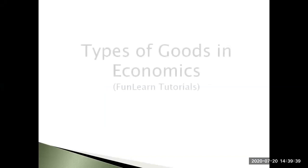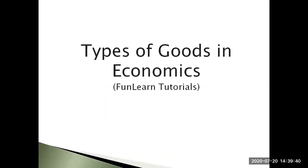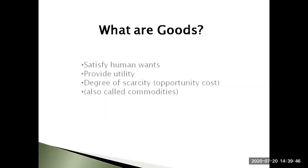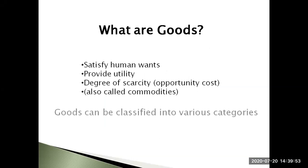In today's video we'll be covering types of goods in economics. In economics, goods are items that satisfy human wants and provide utility, for example to a consumer making a purchase of a satisfying product. Goods are said to possess various properties and they can be put into a spectrum based on the intensity of the properties that goods possess.